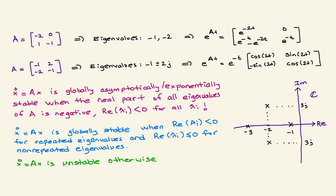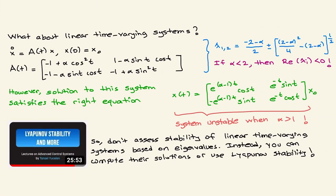I want to focus on global asymptotic and exponential stability because you may have an open-loop system that is unstable or marginally stable. By designing a feedback controller, you would like to stabilize the system — making the closed-loop A matrix globally asymptotically and exponentially stable. You can look at my video on state and output feedback control of linear systems for how to stabilize systems. Eigenvalues are very useful when dealing with linear time-invariant systems.